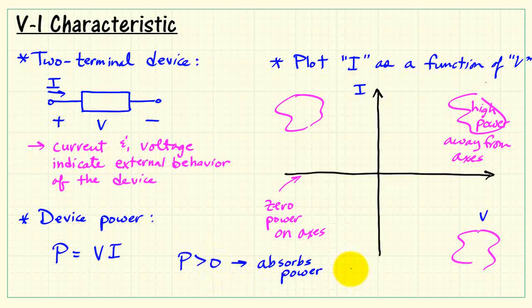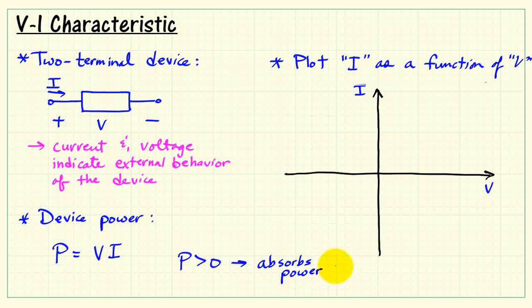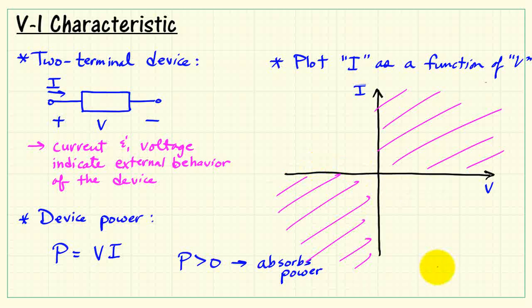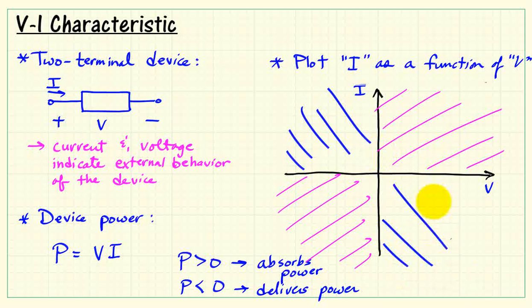More specifically, power greater than zero tells us that the device absorbs power. And so that's going to happen when both V and I are positive and when both V and I are negative—so we think of that as quadrants one and three. When power is negative, then the device delivers power, and that would be in these quadrants here, two and four.